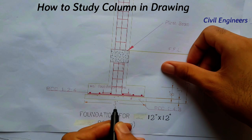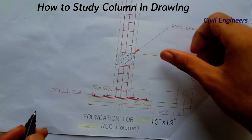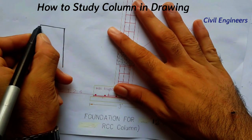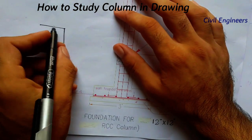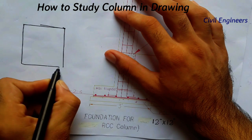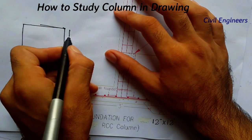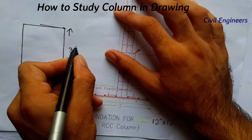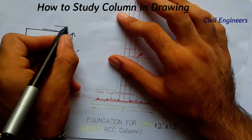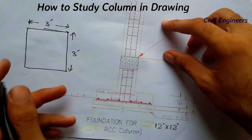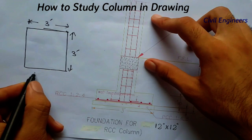The foundation must be square. In cross-section the foundation dimension is 3 feet. So this is the top view for the foundation, with dimensions of 3 feet by 3 feet.